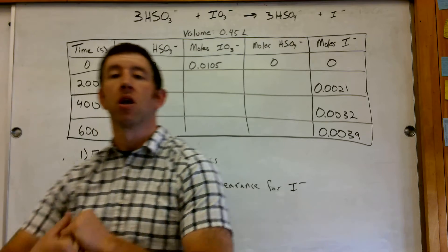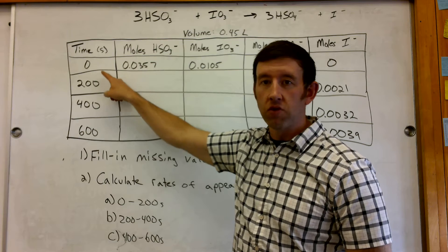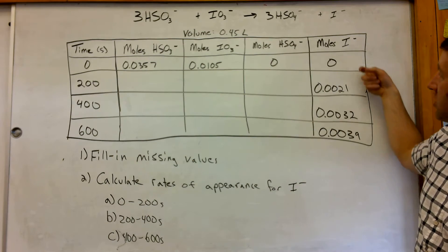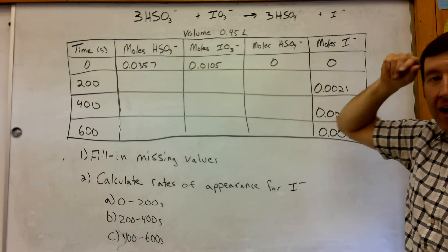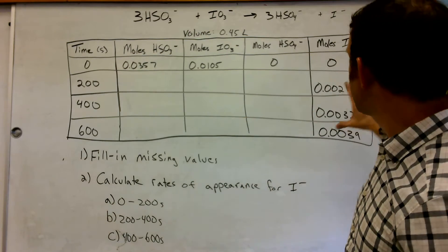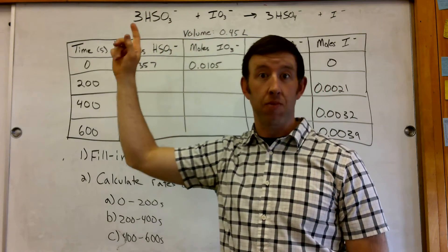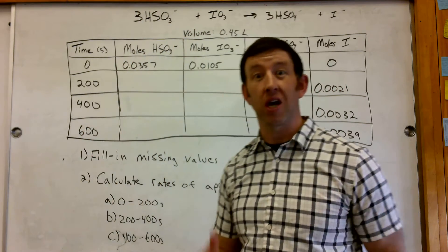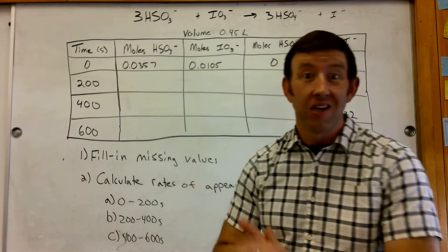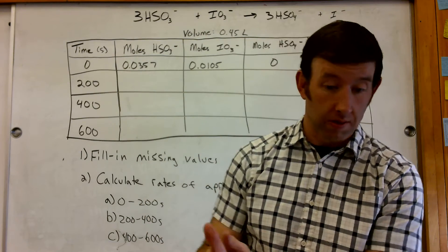What we have to consider is what this table is telling us. This is over time at intervals of 200 seconds. In this last column, we have some information about how much of that iodine ion is forming in solution during those intervals. Because we know this information and we have a balanced reaction, we should be able to fill in these values using some addition and subtraction, using our mole ratios to make sure we're doing things in the right proportions.